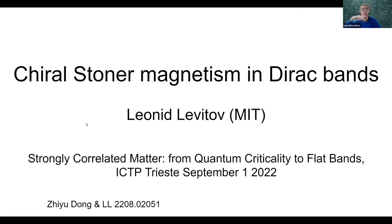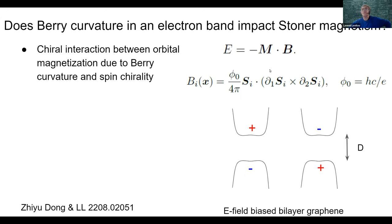The question is: how is band magnetism, described by Stoner instability, affected by Berry curvature in the band? And whether Berry curvature has any effect on Stoner magnetism at all, and if it does, what is it?